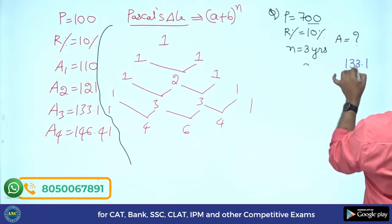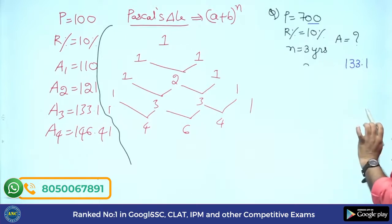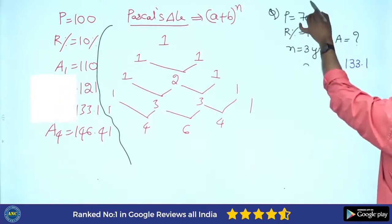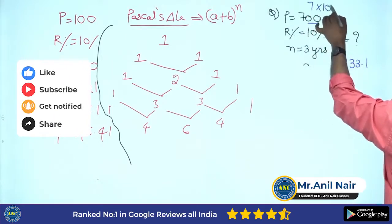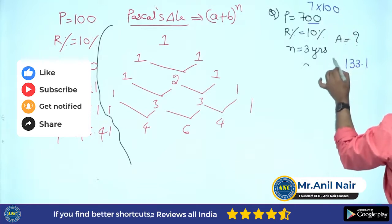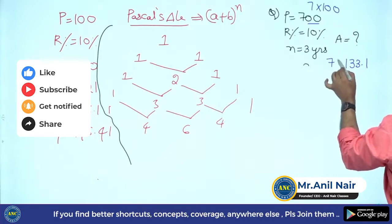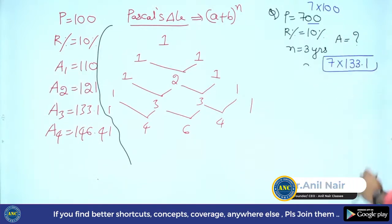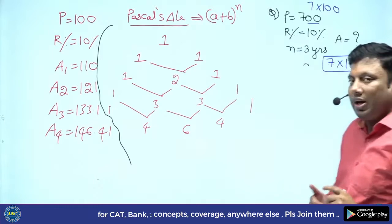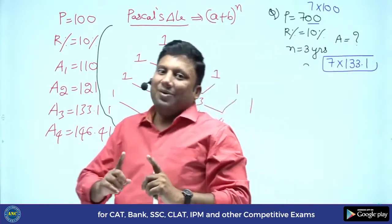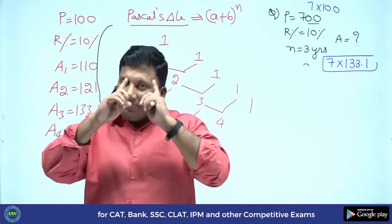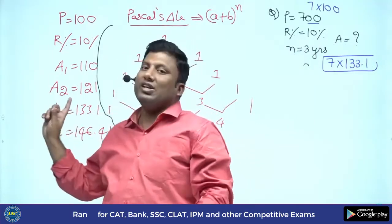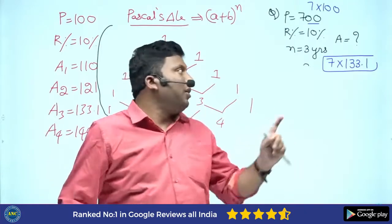The expansion of (a + b) power 3 gives: a cubed + 3a squared b + 3ab squared + b cubed, so the amount for P=100 is 133.1. Principle is 7 times 100, so amount is also 7 times. Without any extra computation, the answer follows directly — for P=100 after 3 years, amount is 133.1.